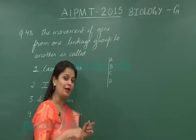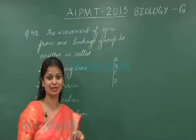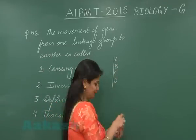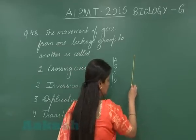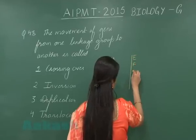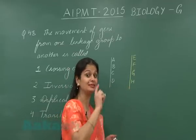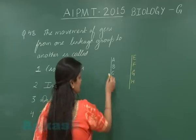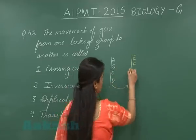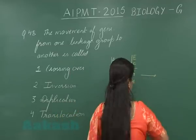In an organism, the number of linkage groups is equivalent to the number of chromosomes in the haploid condition. Now, let's say we have different chromosomes, each representing a different linkage group with their respective genes. If a segment of one chromosome gets transferred to another chromosome, and a segment from that chromosome is transferred back, then a certain type of condition appears.